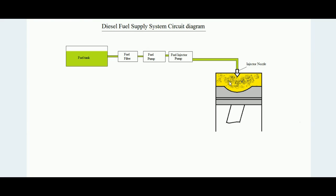For a four-stroke diesel engine, the first stroke is the suction stroke and the second is the compression stroke. At the end of the compression stroke, some amount of diesel is injected by the injector nozzle. The air is compressed to very high pressure adiabatically so temperature increases, the diesel burns and adds heat to the system, developing energy that pushes the piston in the working stroke, followed by the exhaust stroke.